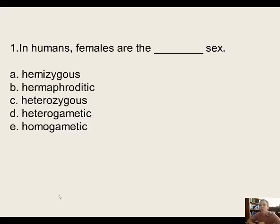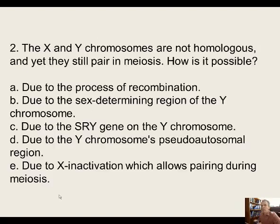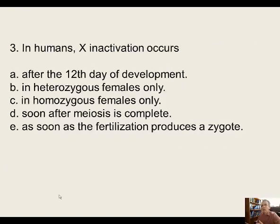So a few questions to begin. Number one, in humans, females are the what sex? Number two, the X and Y chromosomes are not homologous and yet they still pair in meiosis — how is that possible? And number three, in humans, X inactivation occurs.